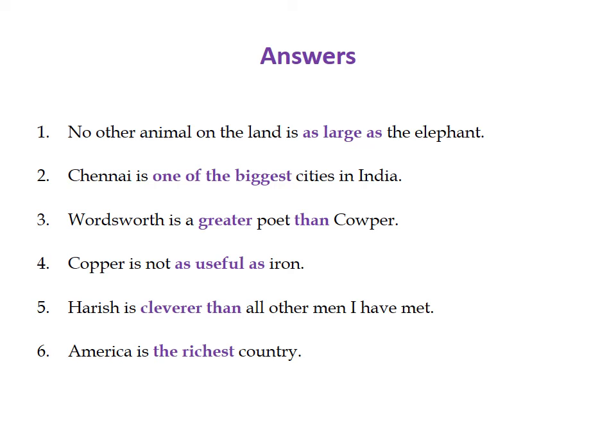We say 'one of the biggest' because it is not the biggest — places like Mumbai, Calcutta, and New Delhi may be bigger. So instead of 'Chennai is the biggest city in India,' we say 'Chennai is one of the biggest cities in India.' For sentence three, the comparative form is: 'Wordsworth is a greater poet than Cowper.' Note the word 'than.'